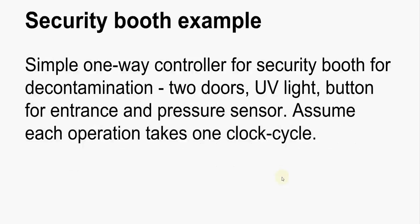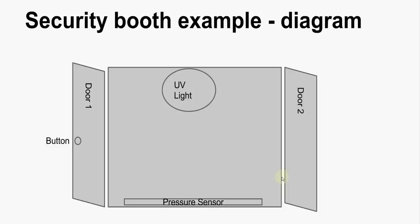So, the security booth example that we used is as follows. A simple one-way controller for a security booth for decontamination, perhaps for a chemical lab or something. There will be two doors. A UV light in between the door. A button to indicate entrance or perhaps a card swipe or a retinal scan. Whatever the case is, it's just the same thing. And a pressure sensor for inside the booth to check whether there is someone inside. Assume that each operation takes one clock cycle. Just to keep things simple. Now, there is a very bad diagram of the way things look. So, the booth will be here in the middle and it will have a UV light in it. That will be one of the outputs. Door one and door two allowing entrance and exit to the booth respectively. A button to indicate that a person wants to enter. And the pressure sensor at the bottom to detect whether or not a person is inside the booth.